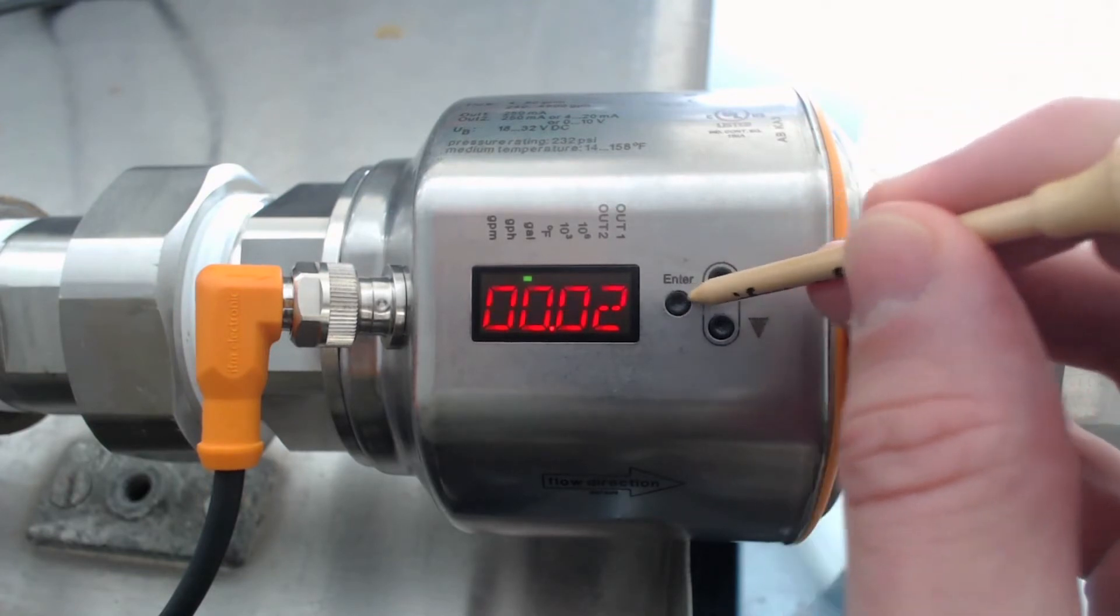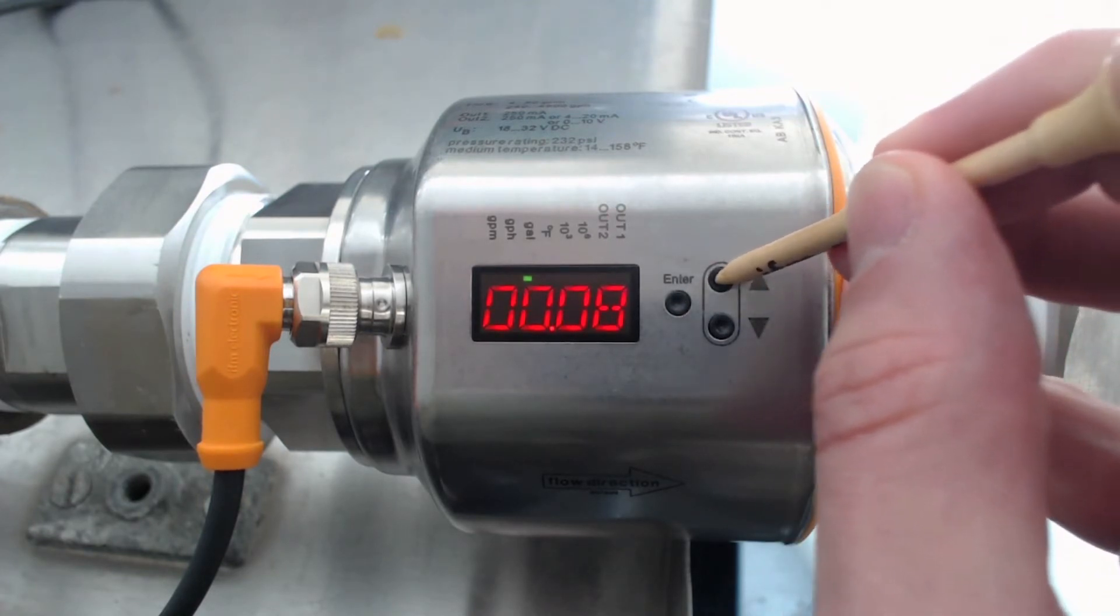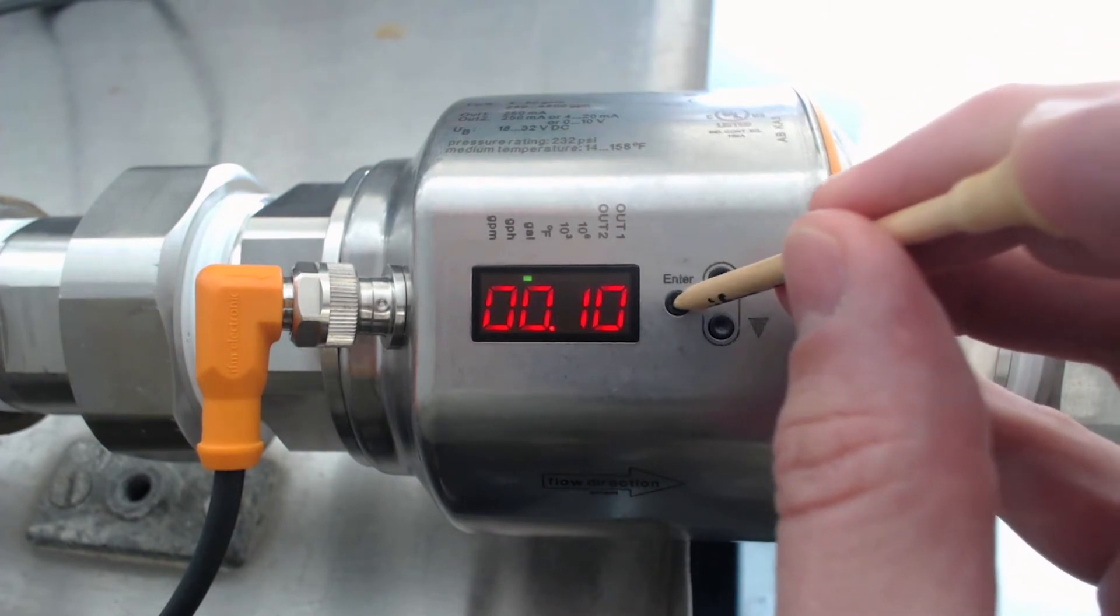We'll set this magmeter for 0.1 gallons to keep it simple in our example. Press Enter to save.